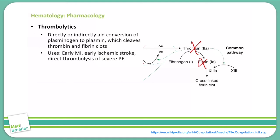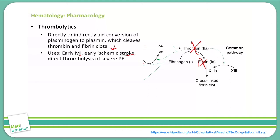We can use thrombolytics in a myocardial infarction early on if we need to break the clot up inside the blood vessels, and we can also use it early on in an ischemic stroke. It is important that this be an ischemic stroke and not a hemorrhagic stroke. If we give a thrombolytic to someone with a hemorrhagic stroke, we will make that bleeding significantly worse, which will likely lead to the patient's death. So we have to rule out a hemorrhagic stroke before giving thrombolytics. This can also be used in a severe pulmonary embolism to directly break up that clot.